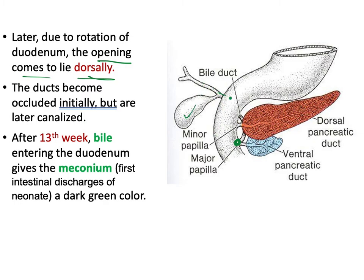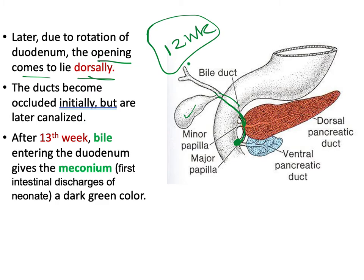The bile duct is now posterior to the duodenum, opening into its second part. Like the esophagus and duodenum, the bile duct is temporarily obliterated and then recanalized. Bile begins entering the duodenum around the 13th week, giving the meconium — the newborn's first stool — its characteristic dark green color.